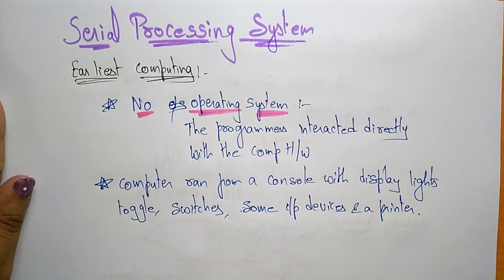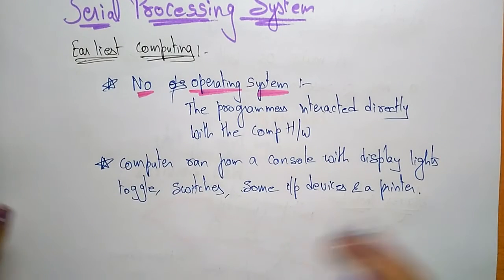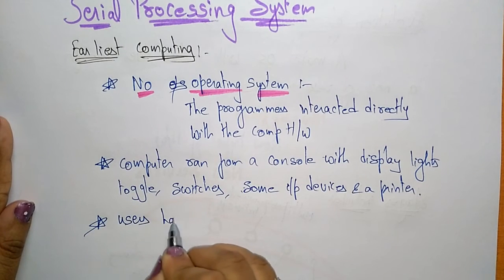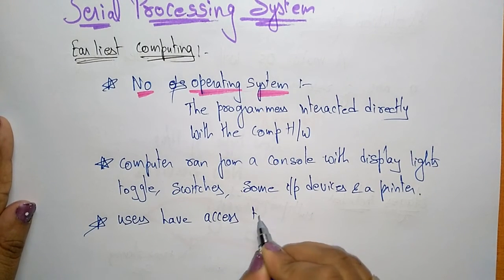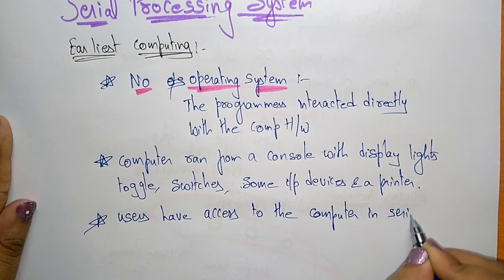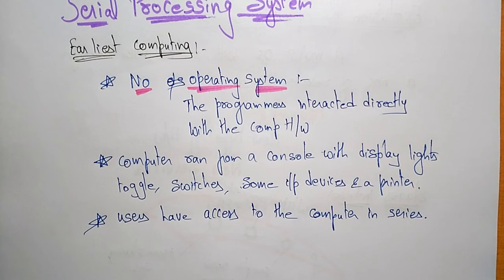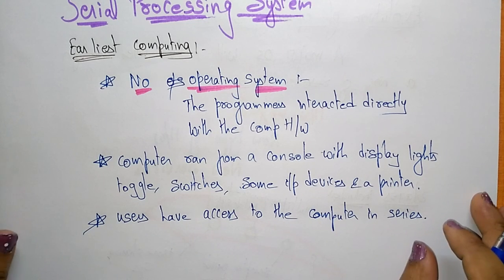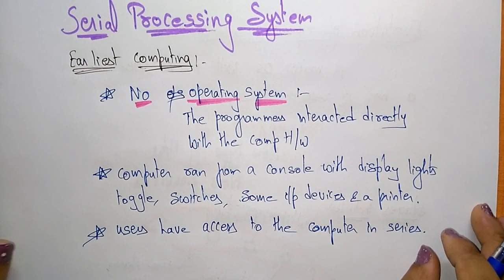Computers ran with the help of the console, and the users had access to the computer in series. The programmer had to directly interact with each and every hardware component — once one action was completed, the next action was taken. Everything was executed in series. This is about the serial processing system.